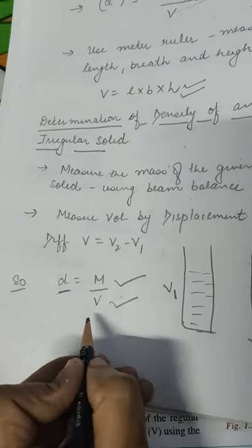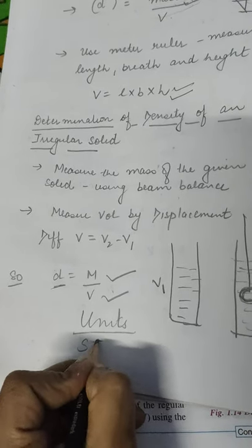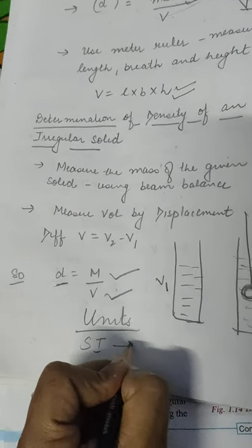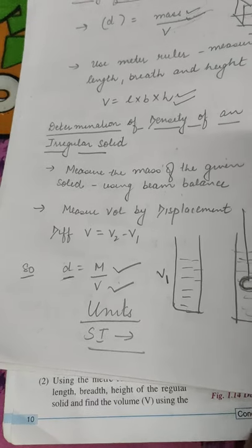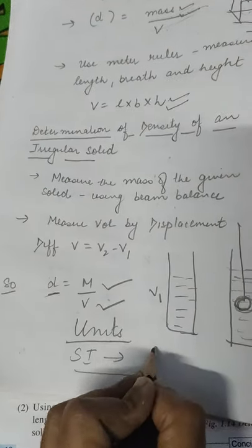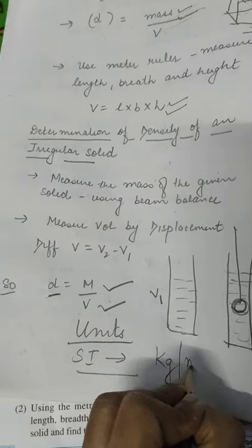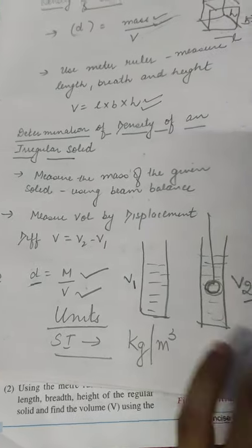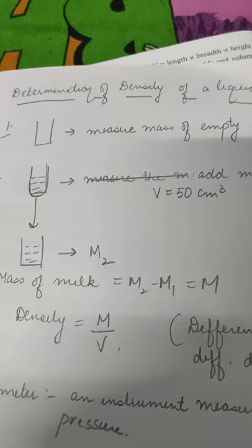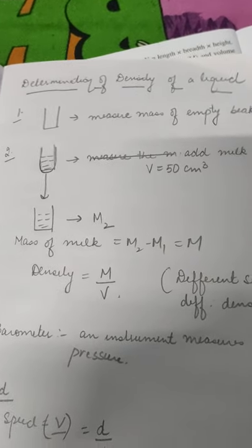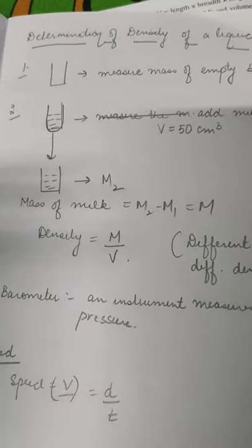One thing you have to take care of is units — both should be in SI units. For SI, mass should be in kg and volume in meter cube, giving density in kg per meter cube. Next, we are having determination of density of a liquid.